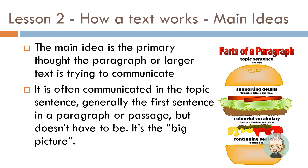Over there on the right, I have a picture of a hamburger. This is one of the ways that the parts of a paragraph can be depicted. The topic sentence is like the top bun, the supporting details are like the tomatoes, lettuce, and the meat, and the colorful vocabulary spices things up like the condiments — mustard, ketchup, and relish — and we have our concluding sentence on the bottom. You smush it all together, and then you have your hamburger.